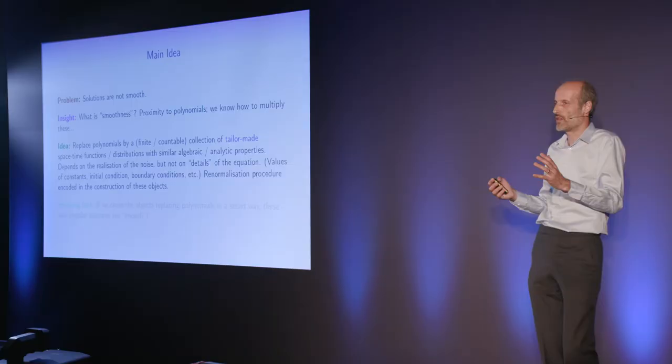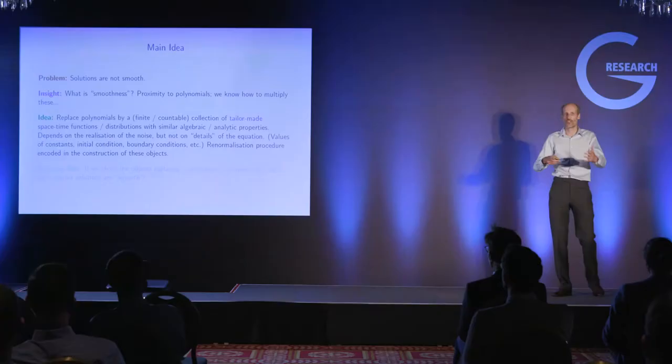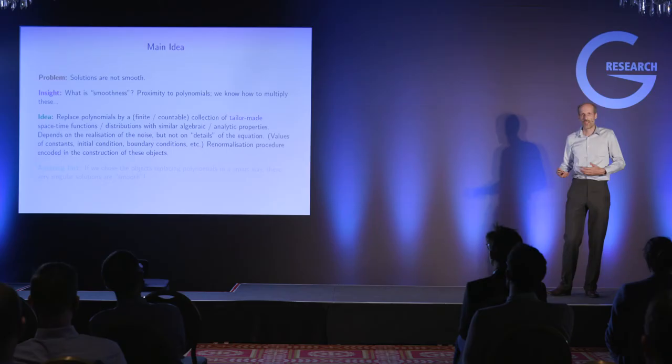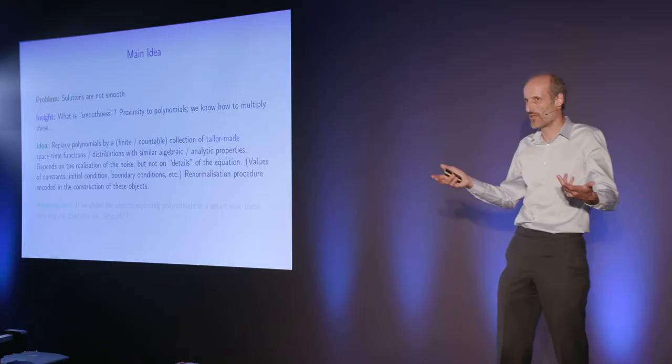Essentially what you do is, if you remember the theory of Taylor expansions from your undergraduate days — where you have smooth functions, you replace it with a constant term, then there's a slope, then maybe you approximate it by a parabola and so on. You get better and better approximations and that works very well for smooth functions. The idea is you try to do something similar for very irregular functions. You try to build a theory which is a little bit like Taylor expansions, but it works for things that are very irregular and random instead of very nice and smooth and deterministic.